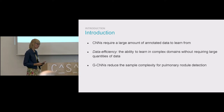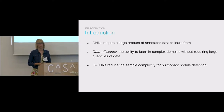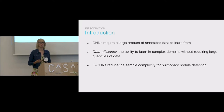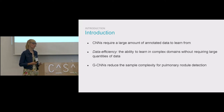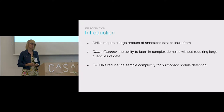GCNNs are CNNs with group convolutions rather than regular convolutions as a drop-in replacement layer that reduce the sample complexity of the network. In this work, we've managed to reduce the sample complexity for pulmonary nodule detection by nearly 10 times.